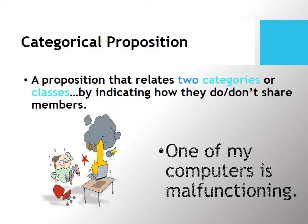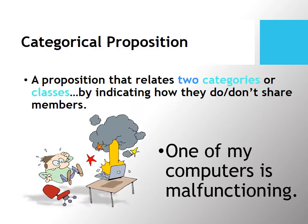Or, to give another example, 'one of my computers is malfunctioning.' You've got a kind of small category — your computers — and malfunctioning things. Again, two classes or categories in each case.